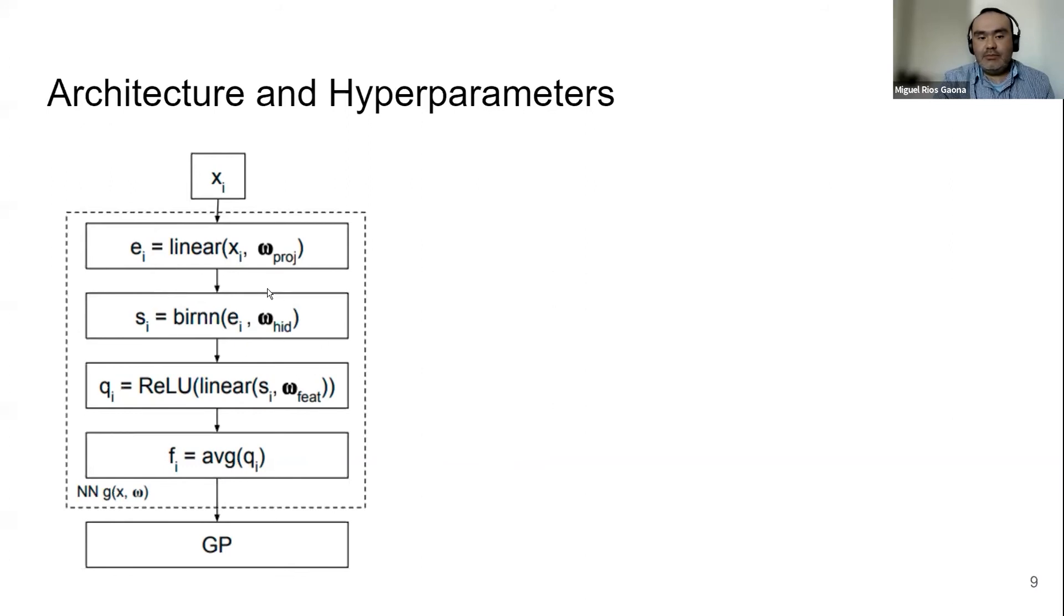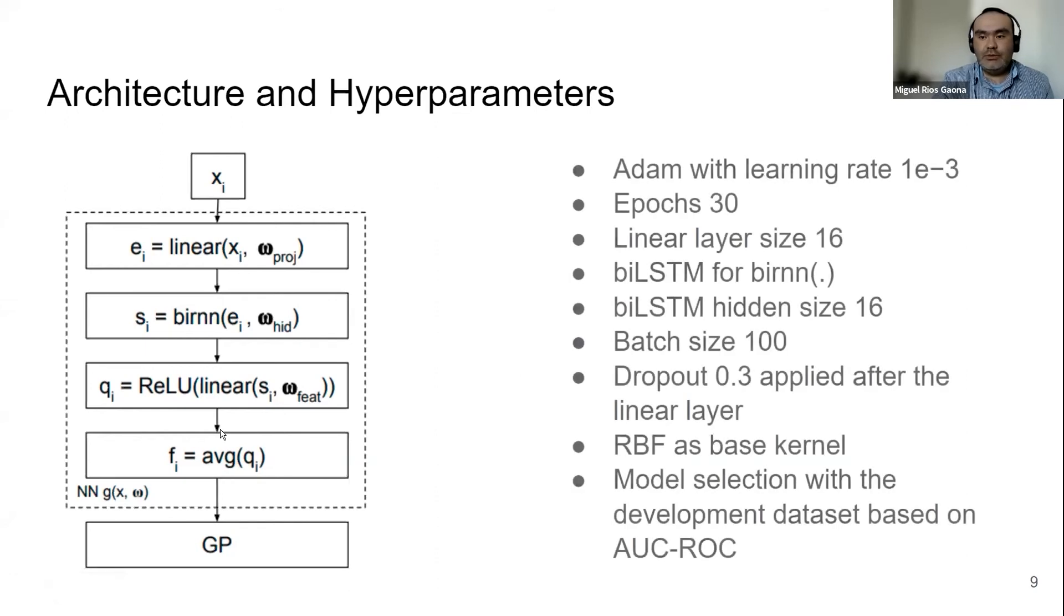Then encoded with a bidirectional RNN for time series. Later, the output of the hidden states of the bi-RNN, we are going to combine them with a linear layer with a non-linearity, and we are going to summarize all these features with an average.